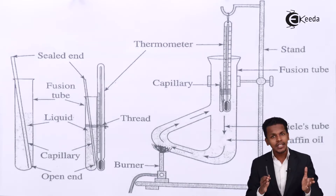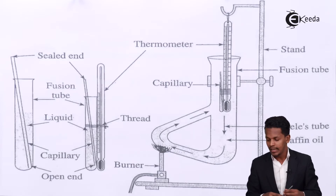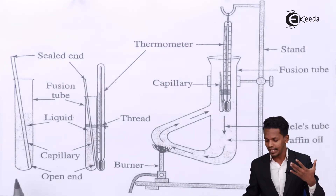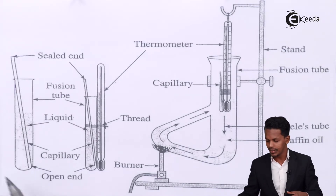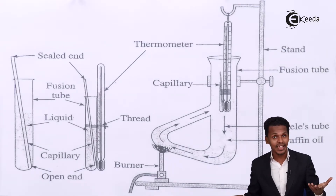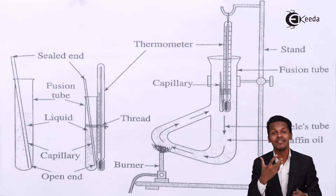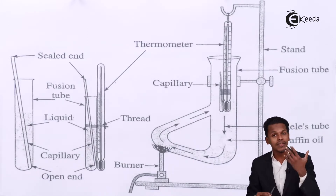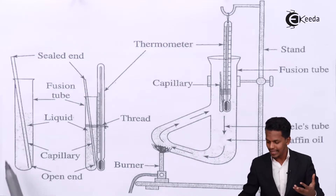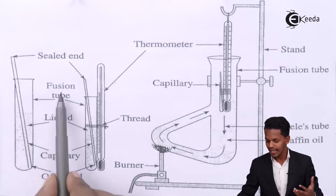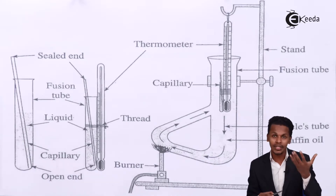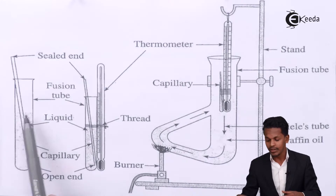The first thing we have to take is a fusion tube — also called a sodium fusion tube — as you can see in the diagram. We insert the liquid for which we have to determine the boiling point into this fusion tube.